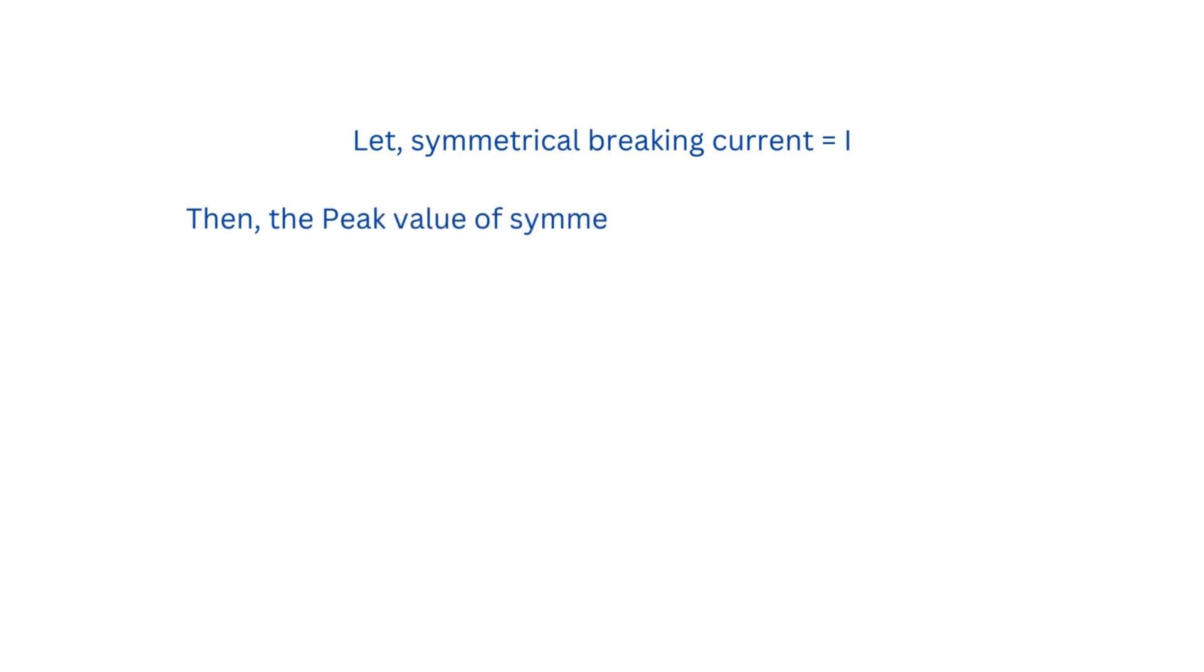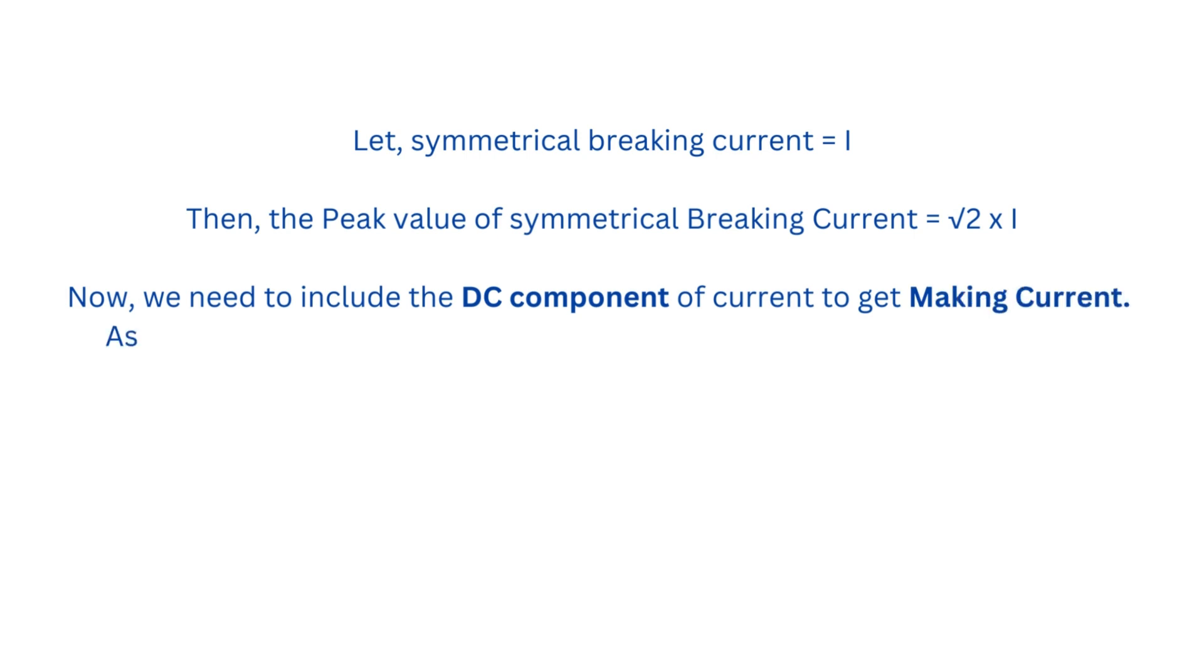To obtain the making current, we need to include the DC component of the current. Since the DC component of the current during the sub-transient state is nearly equal to the peak value of the current, the making current will be root 2 times I into 1.8.